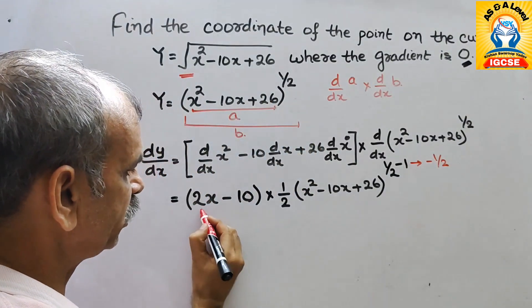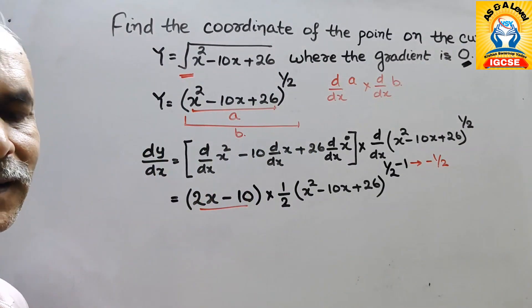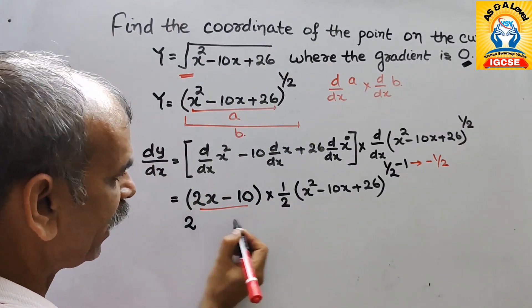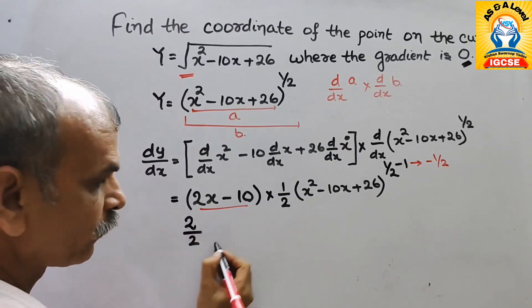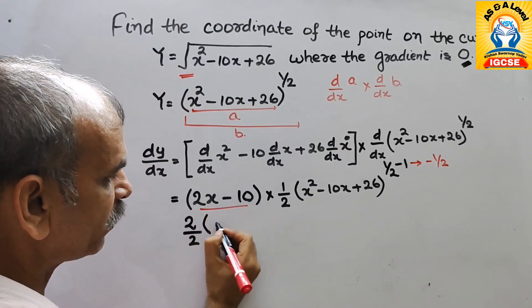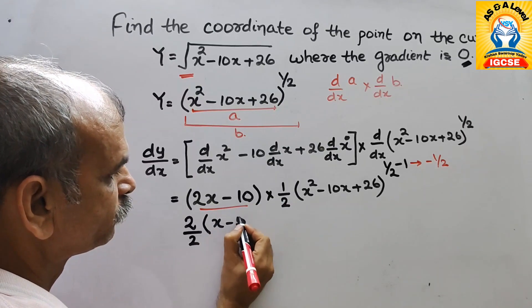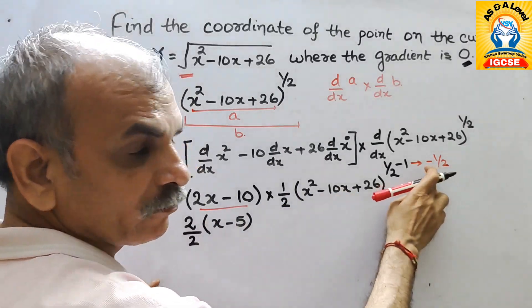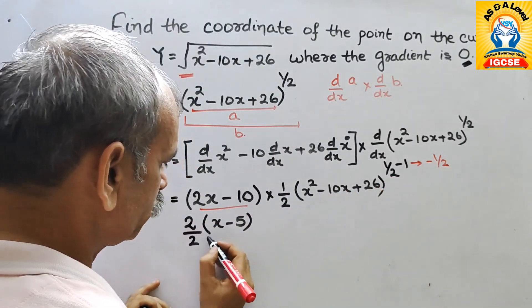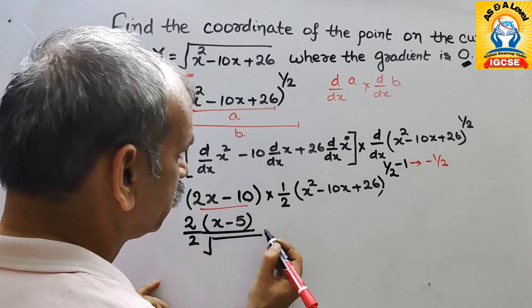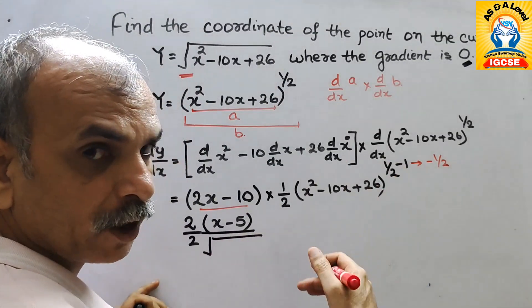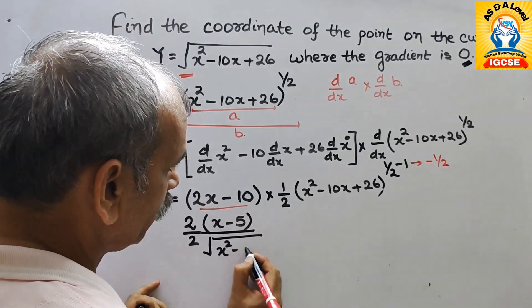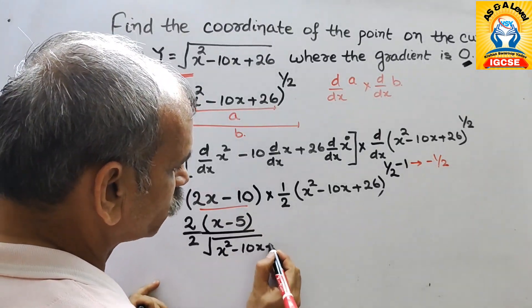Now if you see this, here 2 is common. Just we will take it out. So here 2 will come here and this 2 will be down. And the remaining is x minus 5. And this is negative. So that means it will come down. So therefore it will be root over. And 1 by 2 it will come down as positive. So 1 that is root over. So here comes x squared minus 10x plus 26.